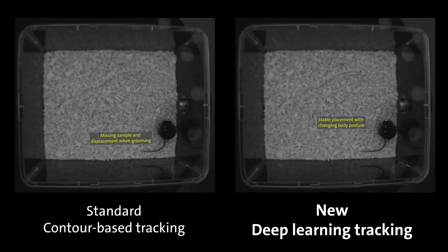When the animal changes body posture, for example due to grooming, the deep learning technology is also better suited to correctly place the body point.